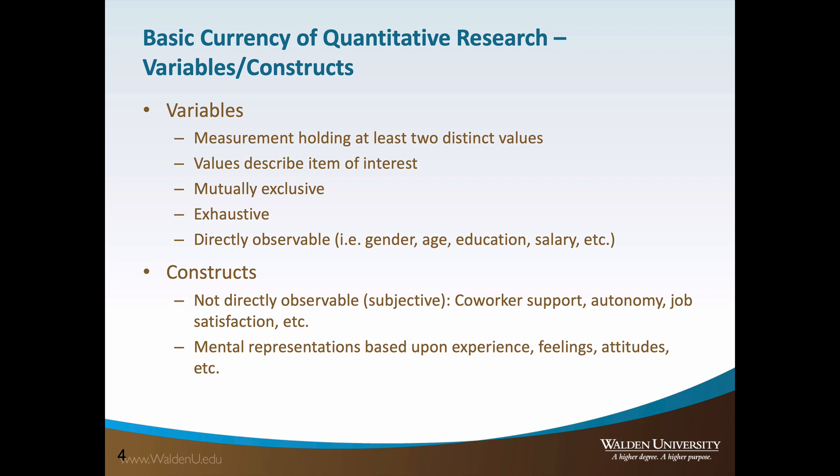Variables and constructs represent the basic currency in quantitative research, and there is a distinct difference between the two. Both variables and constructs are measurements holding at least two distinct values, and these values describe the item of interest. However, variables are directly observable measurements, whereas constructs are subjective measurements.